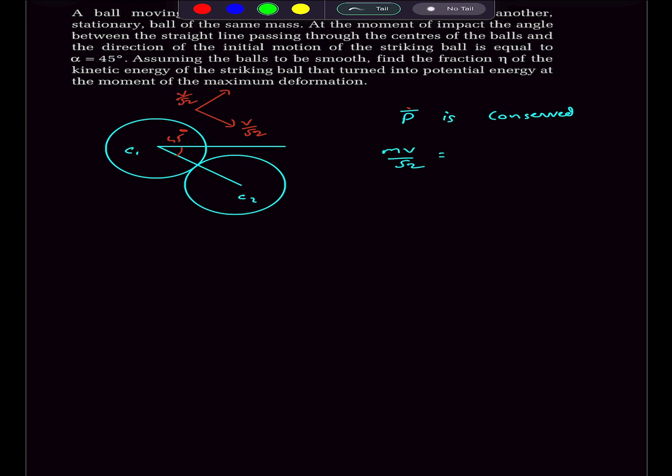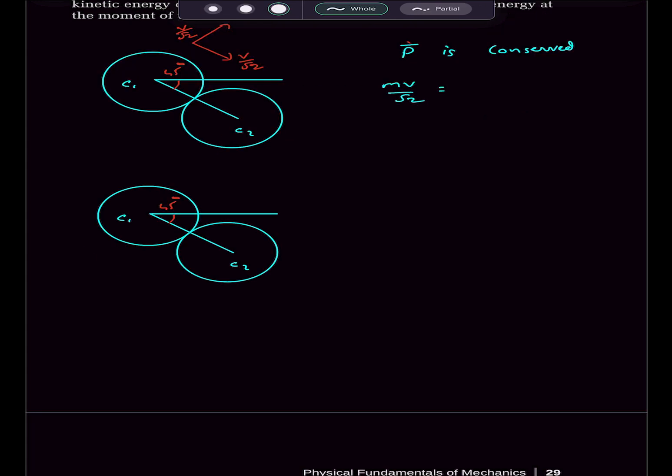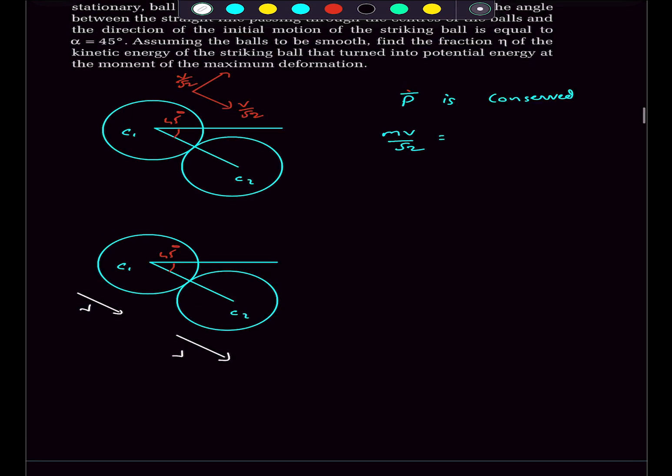So what happens is initially when this ball collides with this ball, there will be deformation at this interface. And as a result, this ball will start gaining some velocity. And finally, when the situation of maximum deformation is reached, both these balls will attain the same velocity, and then they will start separating from each other.